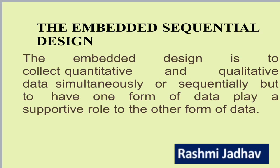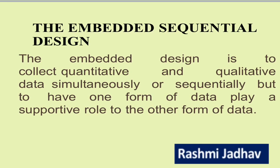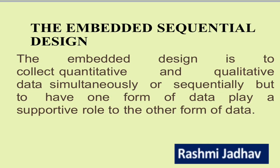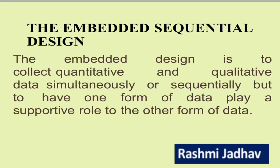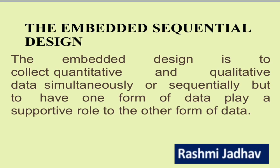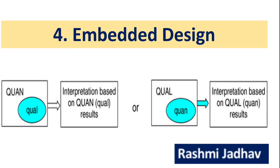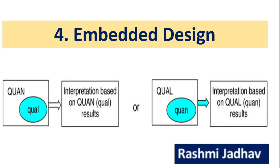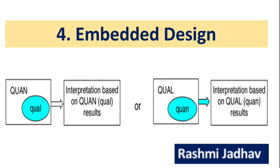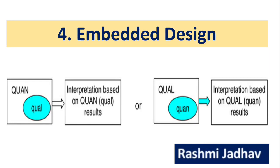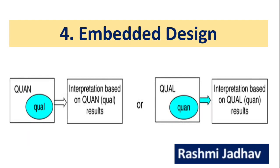The last design is the embedded sequential design. This design collects quantitative and qualitative data simultaneously and sequentially, but has one form of data play a supportive role to the other. Embedded means enclosed or a part of something. In one variant, both quantitative and qualitative data are collected, but qualitative data plays a supportive role and quantitative results are taken in the final analysis. In another variant, qualitative data is primary and quantitative data plays the supportive role.